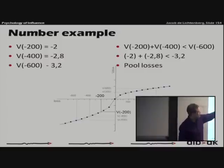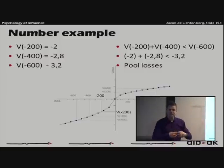So here, for example, the number example gives us minus 4.8, which is a lot worse than minus 3.2.